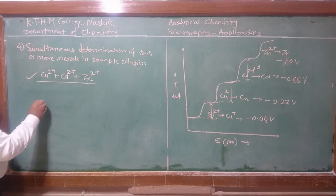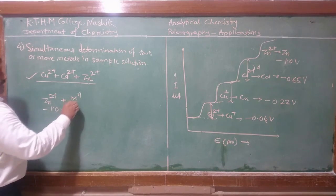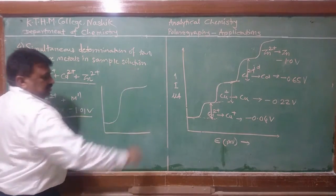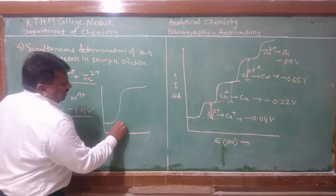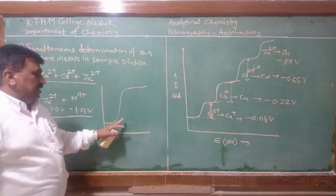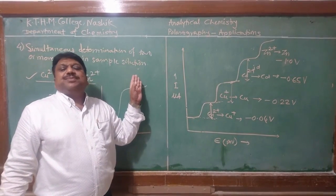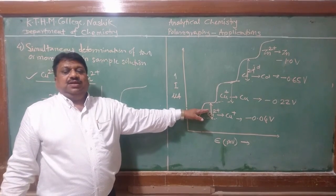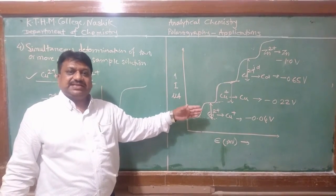However, if two metal ions reduce at nearly the same potential — for example, if another ion also reduces at -1.01 V alongside zinc at -1.0 V — only a single wave is obtained, and the diffusion current is the sum of both. In that case, simultaneous determination is not possible. Therefore, for simultaneous determination of two or more metal ions, each must reduce at its own distinct potential value with a separate wave. With this, we stop here and will continue the applications of polarographic analysis in the next lecture. Thank you very much.